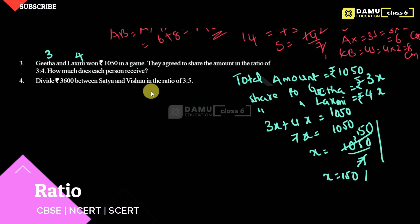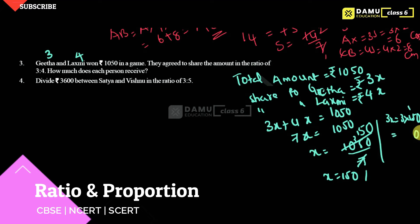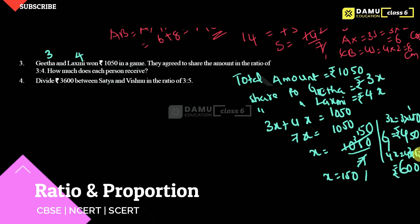So what is each person's share? Gita's share is 3x, that is 3 into 150, which is 450 rupees. Then Lakshmi's share is 4x, that is 4 into 150, which is 600 rupees.